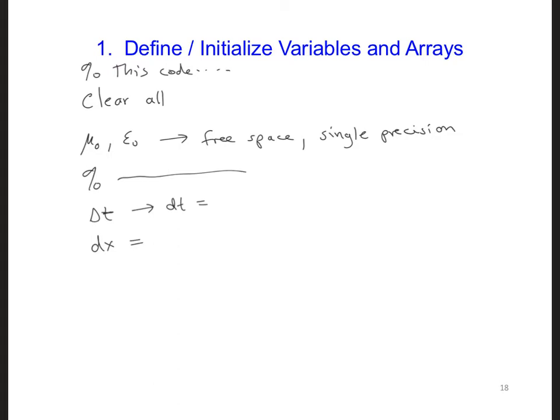We also need to define the coefficients CA, CB, DA, DB, and we will want to define the ez and the hy arrays. You may need to define other variables, but all of this on this page, these are the main ones.